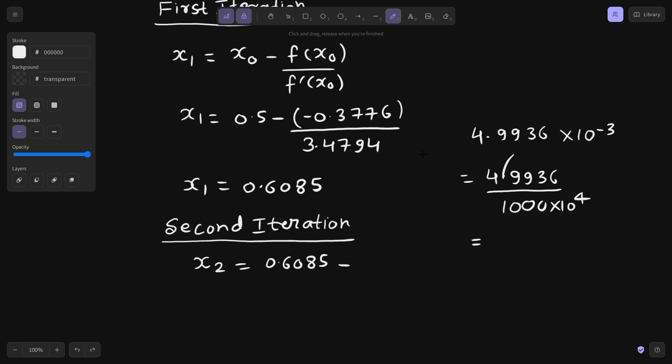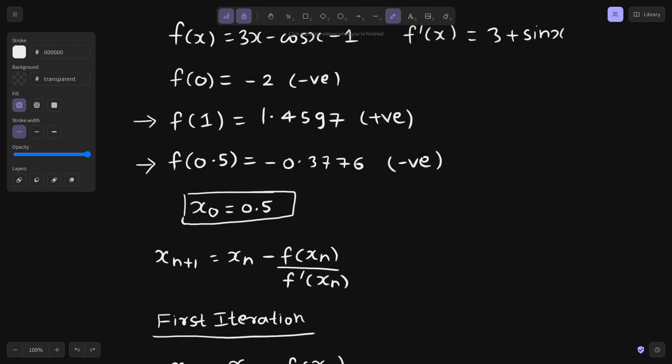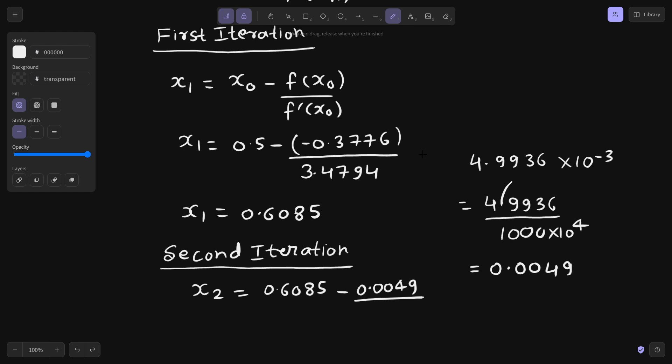If I simplify this, this is 4.9936 divided by 1000. If I simplify it further, I can write this as 0.0049. This value is what you are getting, 0.0049 divided by value of derivative which is 3 plus sin x. So 3 plus sin 0.6085, this is giving me 3.5716.